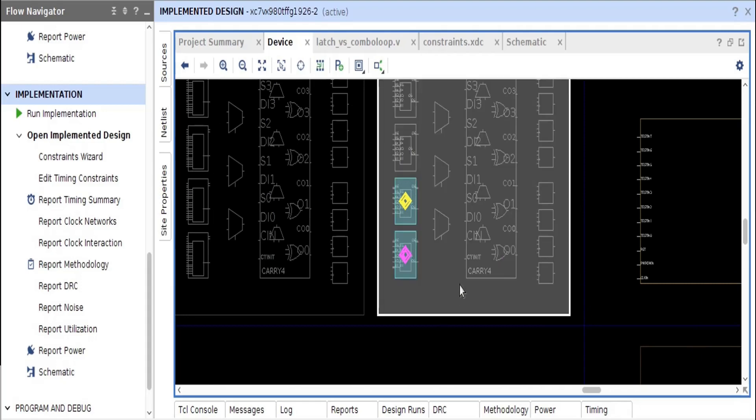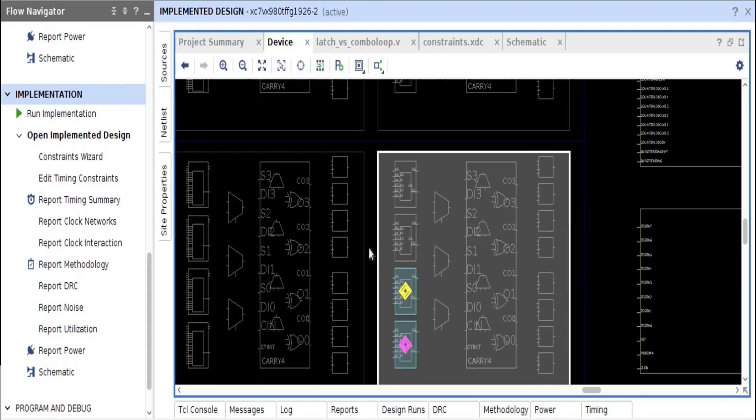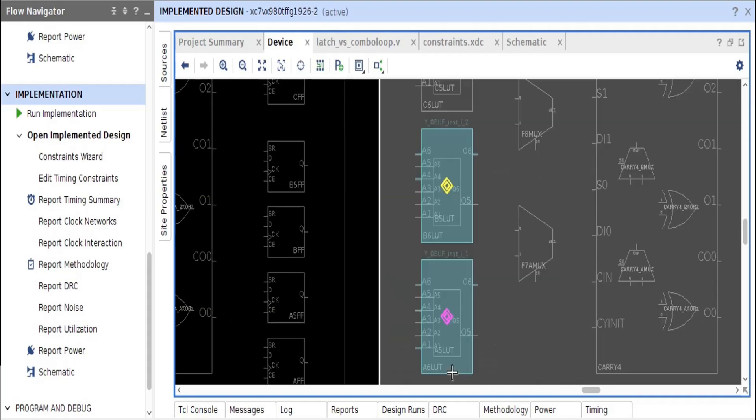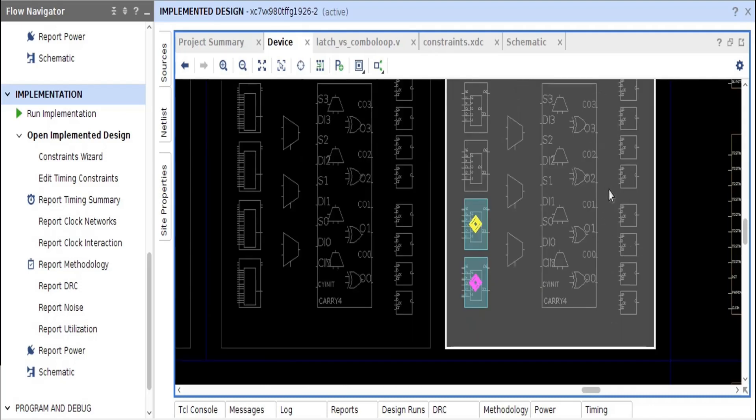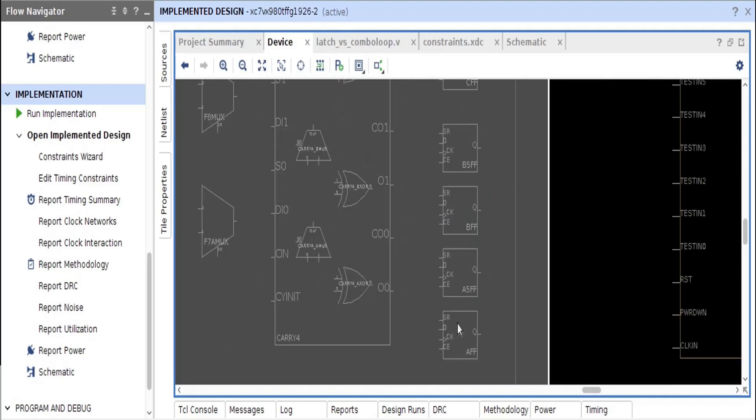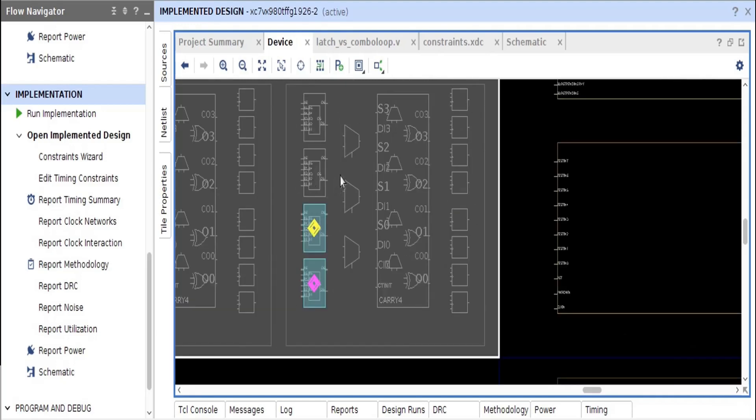This is a slice, and inside the slice it is using two LUTs to implement it. LUTs are nothing but combinational logic. So it is not using the dedicated latch which is available here. And just for our understanding, it is also not utilizing 2-to-1 multiplexers. Instead of that it is using LUTs.